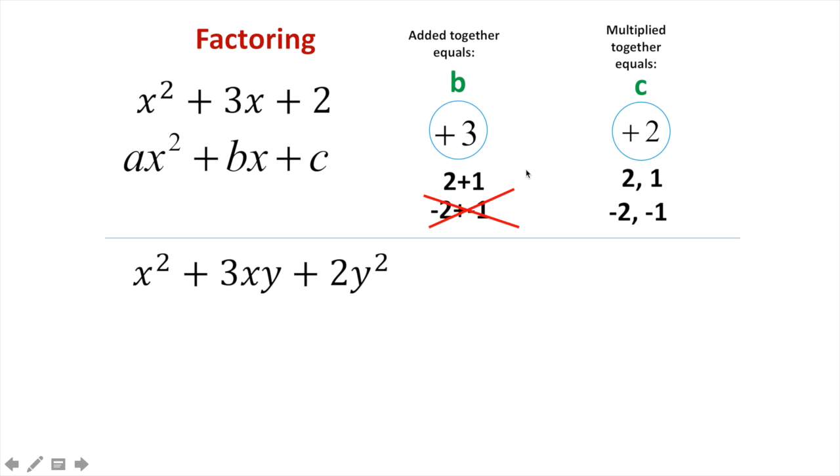So this one right here would not work. So, my factors are x. I know that because that's what I started with, and then I just write in my factor here, a positive 2 and a positive 1. And that's it. That's my answer on that one.